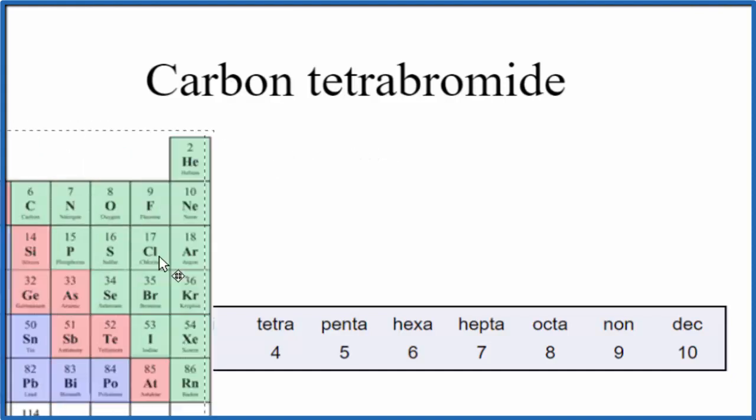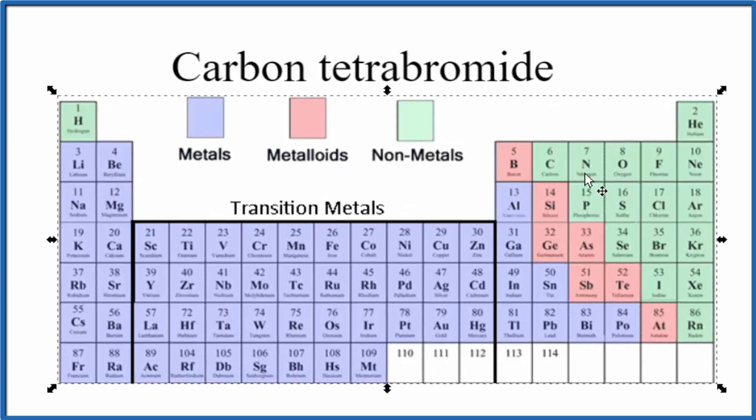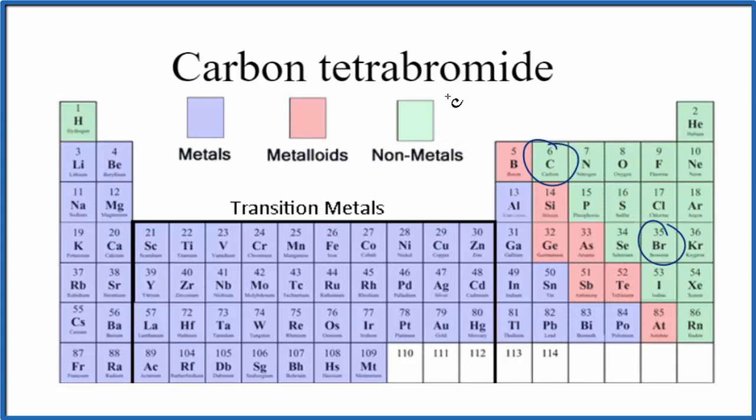So if we look at the periodic table here, we can see that carbon and then bromine right here, they're both nonmetals.